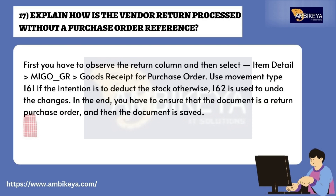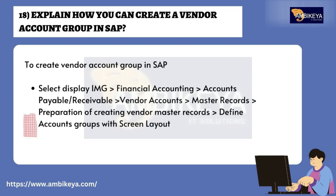Question number seventeen: explain how vendor returns are processed without a purchase order reference. First, observe the return column, then select item detail. In MIKO (goods receipt for purchase order), use movement type 161 if the intention is to deduct the stock; otherwise, 162 is used to undo the changes. Finally, ensure the document is a return purchase order, then save the document.